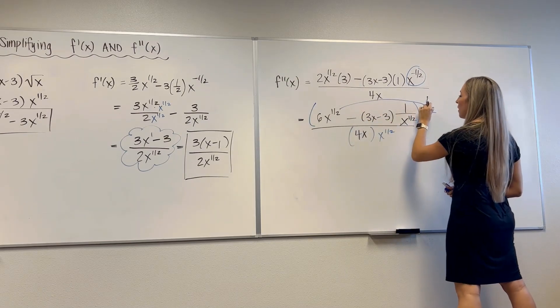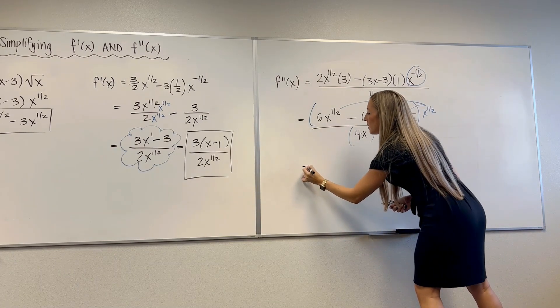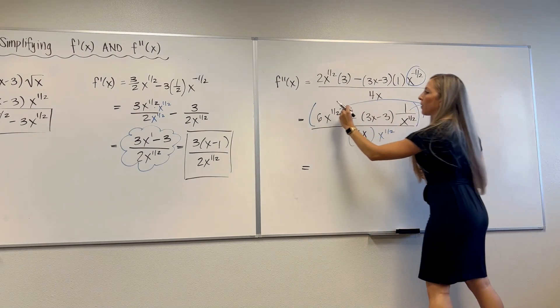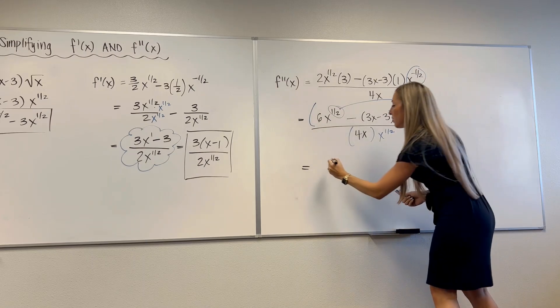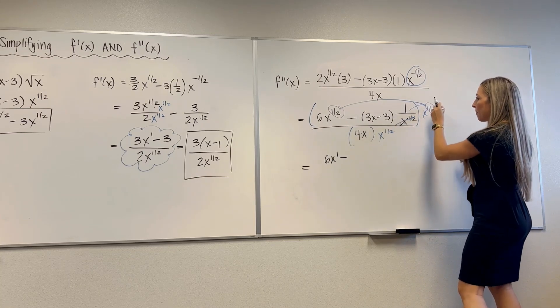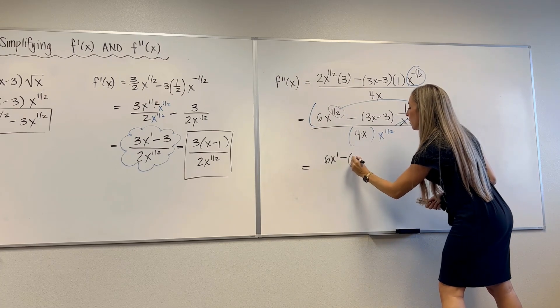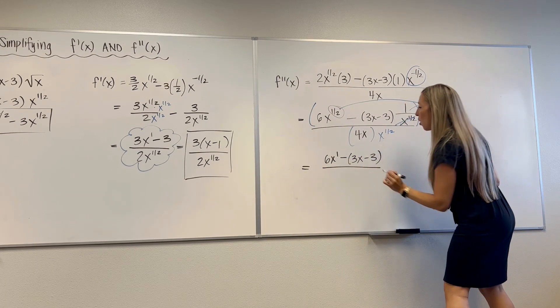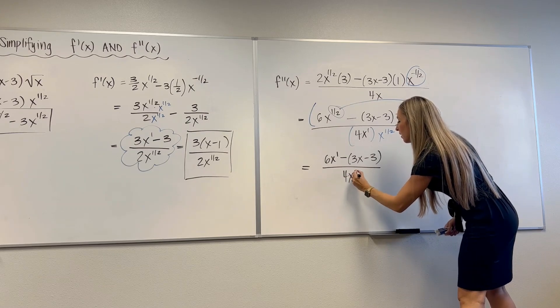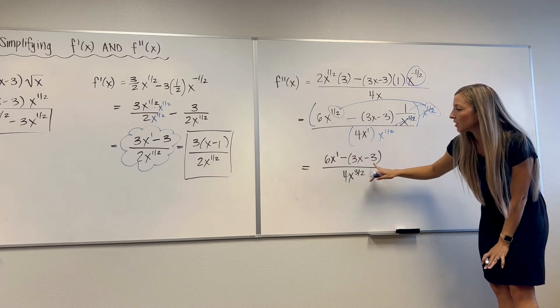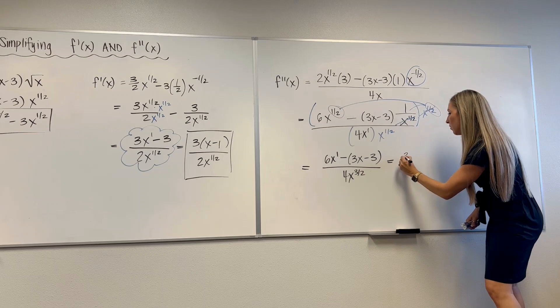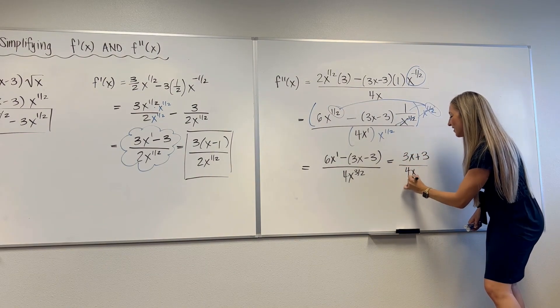This will distribute here, here, and then it's already down there. So let's see. We've got 6x to the 1 half times x to the 1 half. We add these exponents. So that's going to be 6x to the 1 minus. And then the whole point of doing this was so these guys would cancel. So we've got minus 3x minus 3 over, add these exponents. There's a 1 here. So this is 4x to the 3 halves. And then now we can just combine like terms. So this is going to be positive 3x plus 3. Wow, how cute.